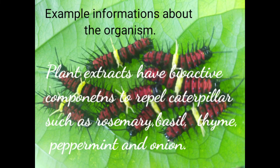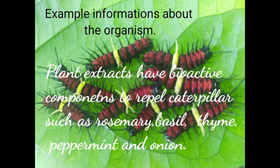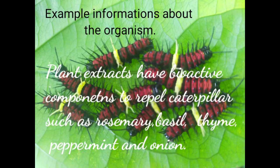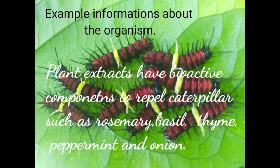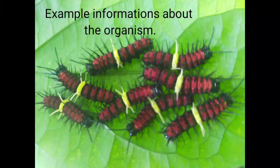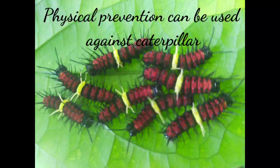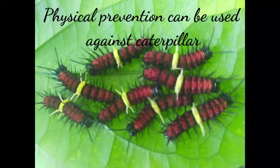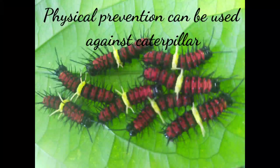Example information about the organisms: Plant extracts have bioactive components to repel caterpillars, such as rosemary, basil, thyme, peppermint, and onion. Physical prevention can also be used against caterpillars.